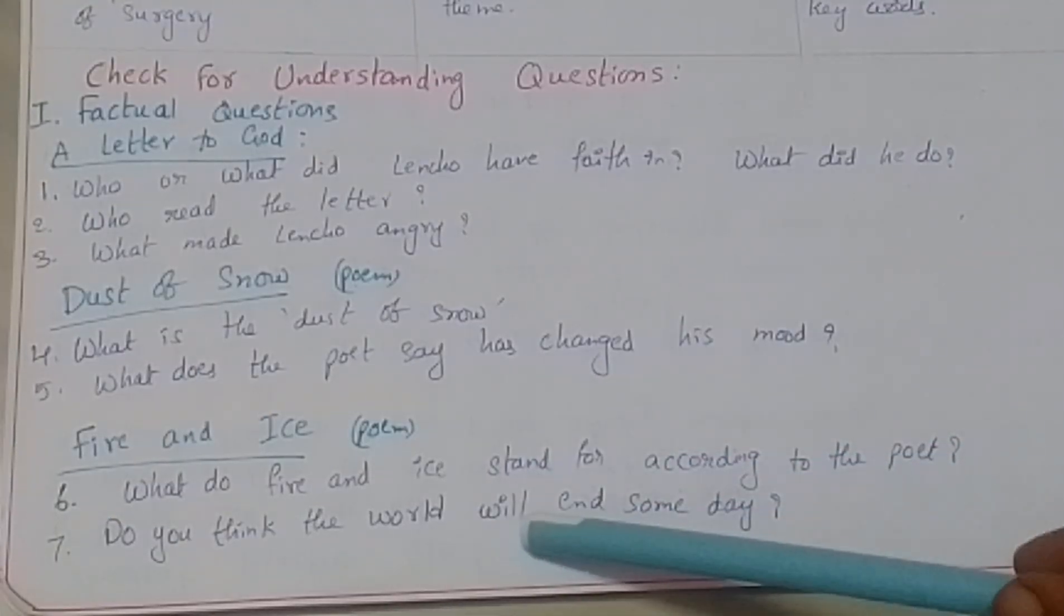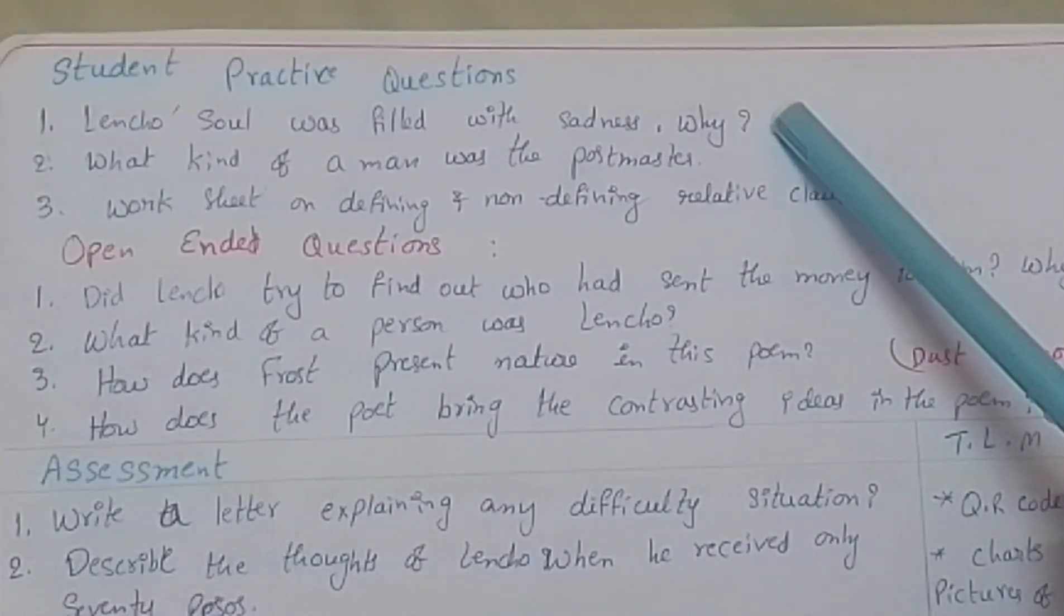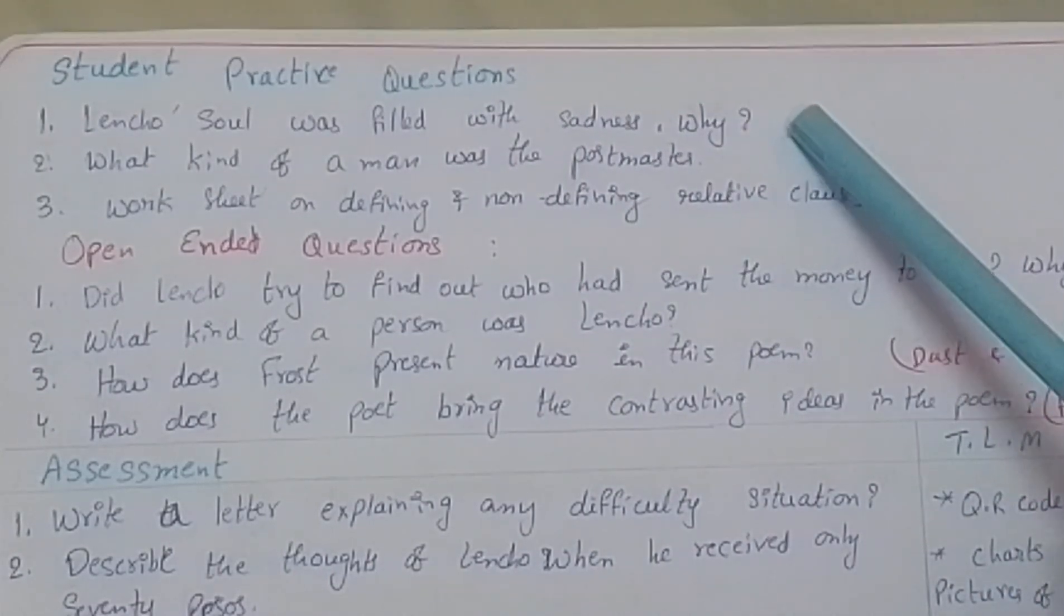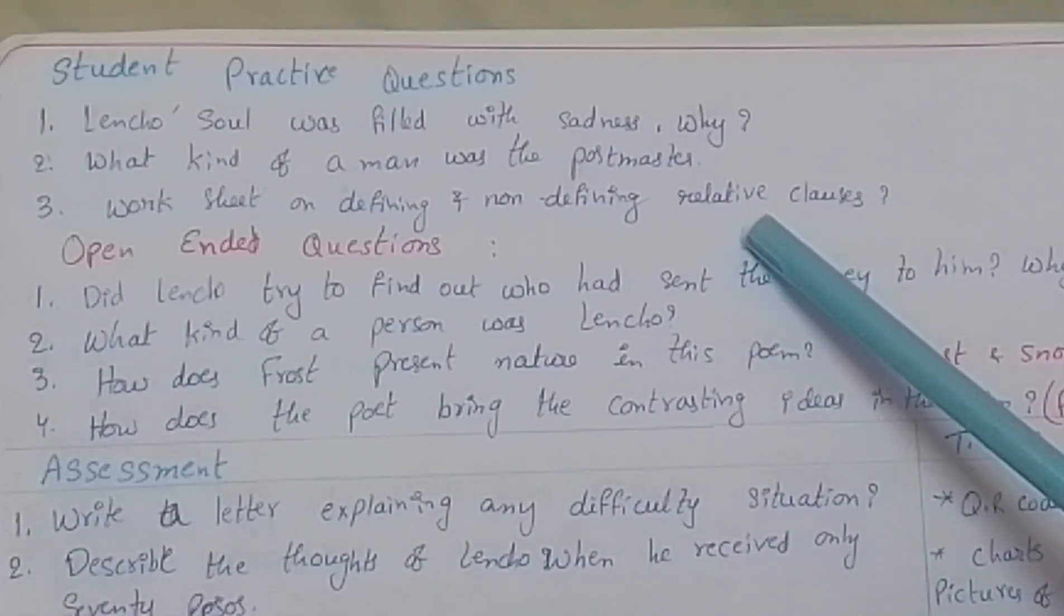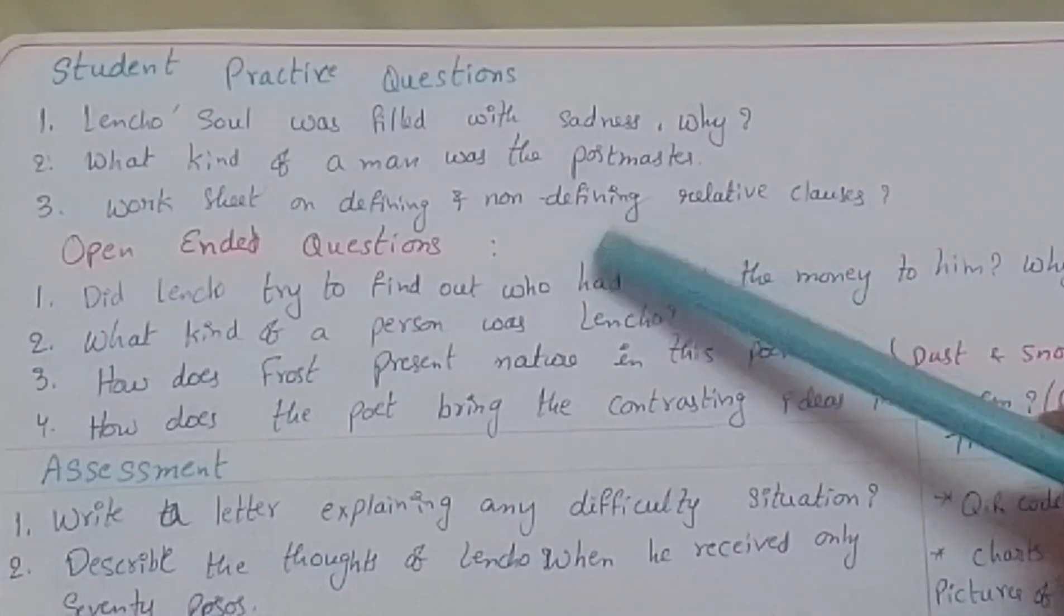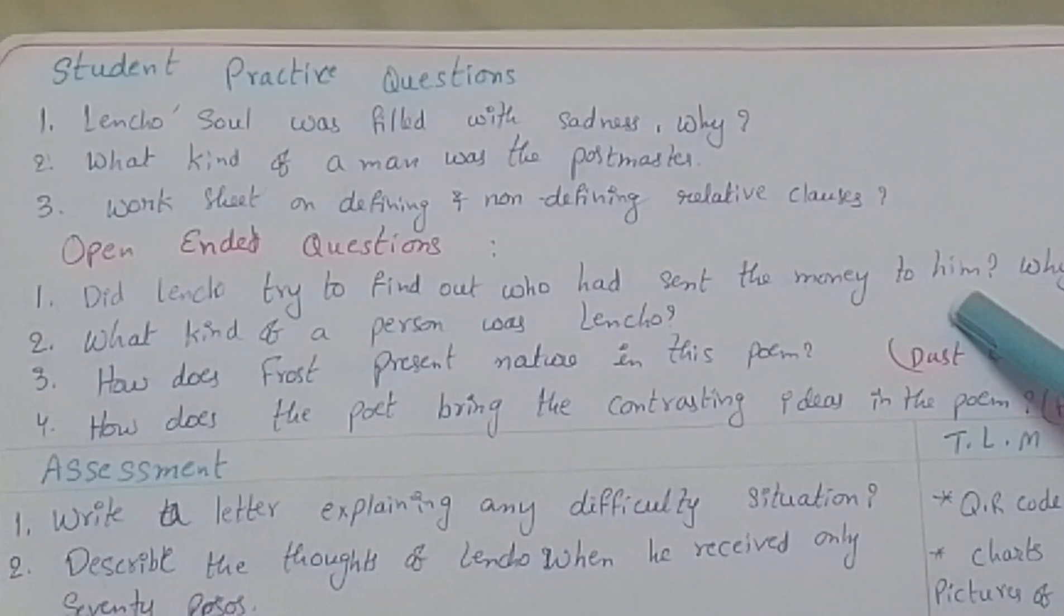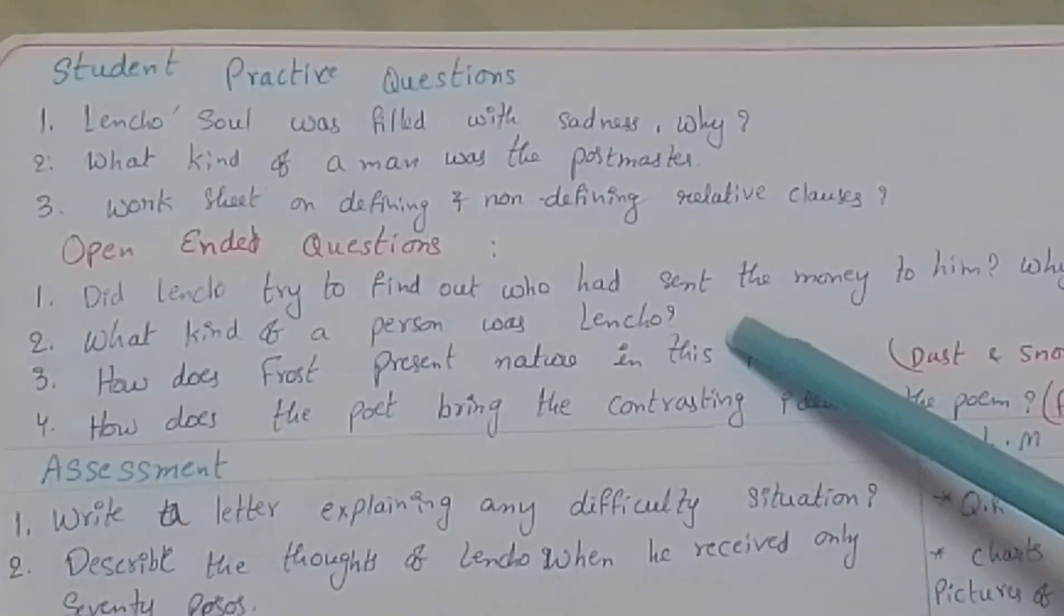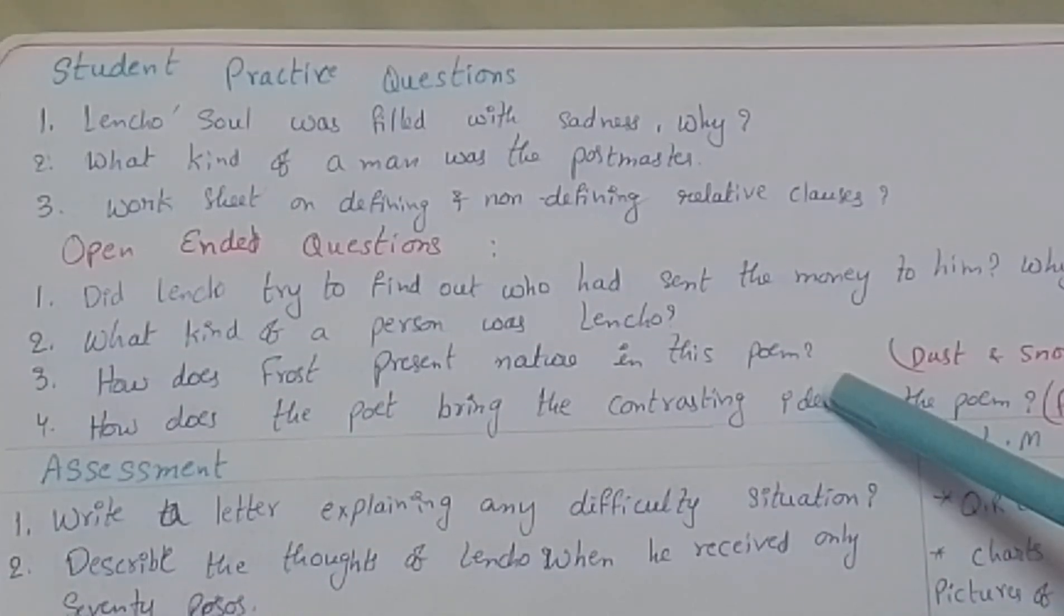Fire and Ice: What do fire and ice stand for according to the poet? Do you think the world will end someday? Student practice questions: Lencho's soul was filled with sadness - why? What kind of a man was the postmaster? Worksheet on defining and non-defining relative clauses. Open-ended questions: Did Lencho try to find out who had sent the money to him - why? What kind of person was Lencho? How does Frost present nature in this poem? How does the poet bring the contrasting ideas in the poem?